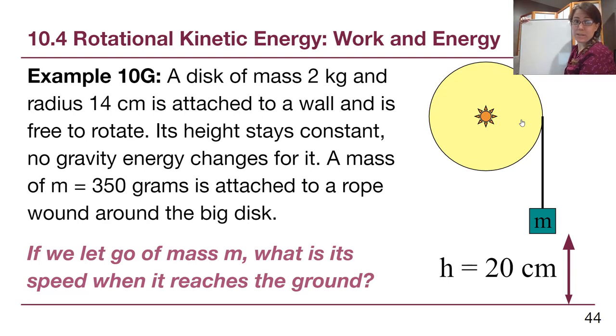In this second example from this section, 10.4, example 10G, we have a system that has two separate objects. We'll remind ourselves that back in chapter 7 we were able to handle similar situations where we asked those questions: are we moving, are we higher, for each object individually. We'll see how that works here in chapter 10 as well. This system is complicated enough that we'll draw a separate before picture and a separate after picture.